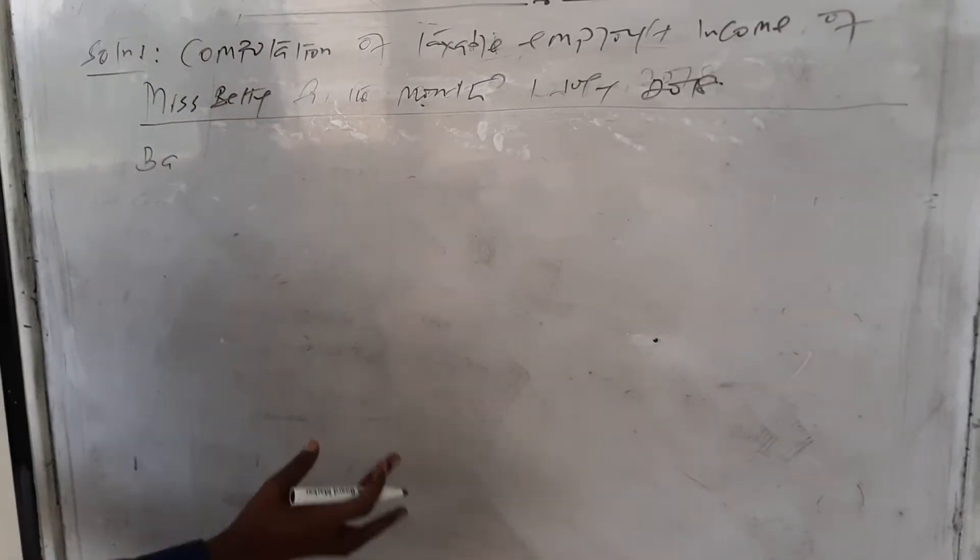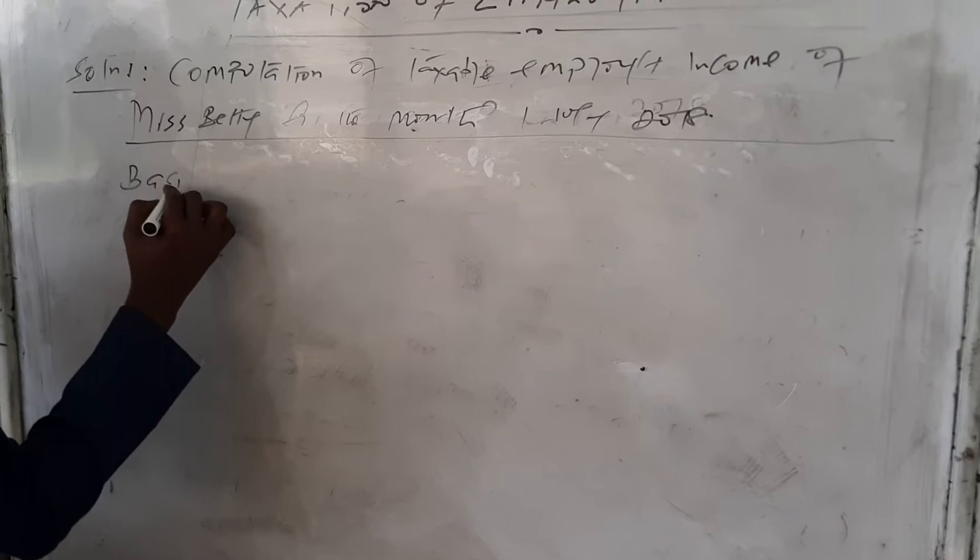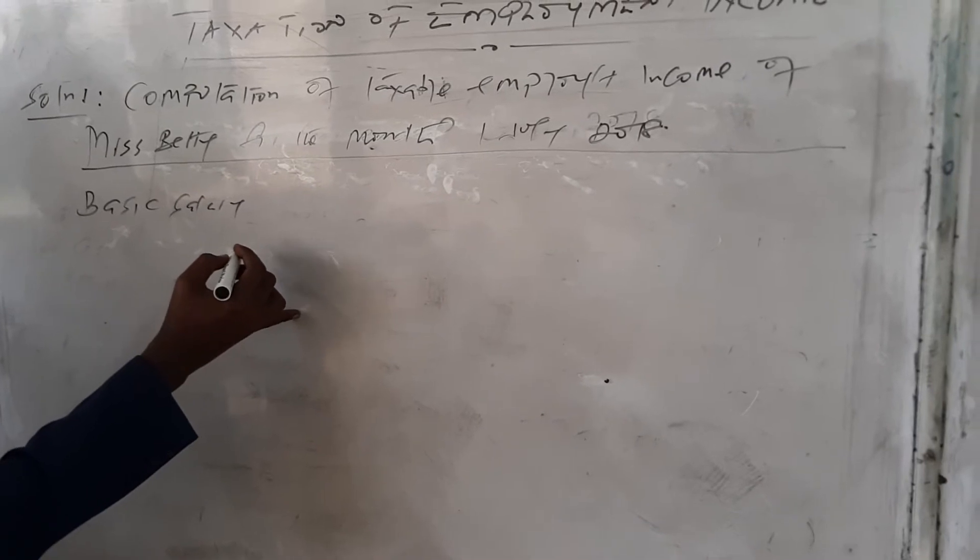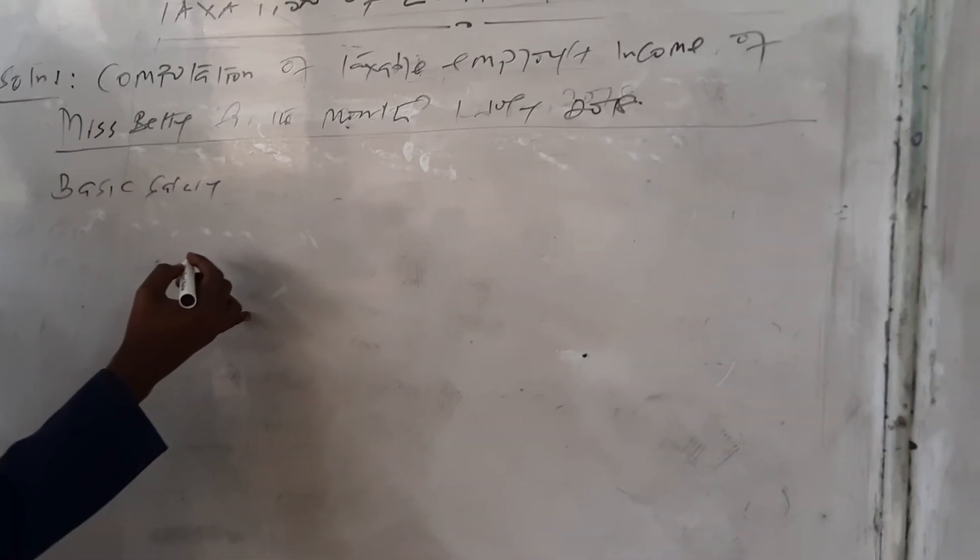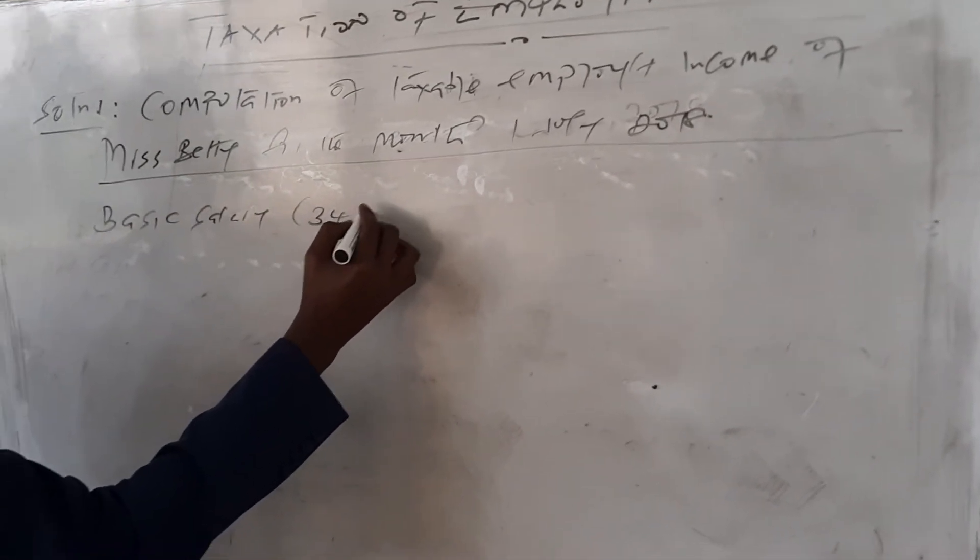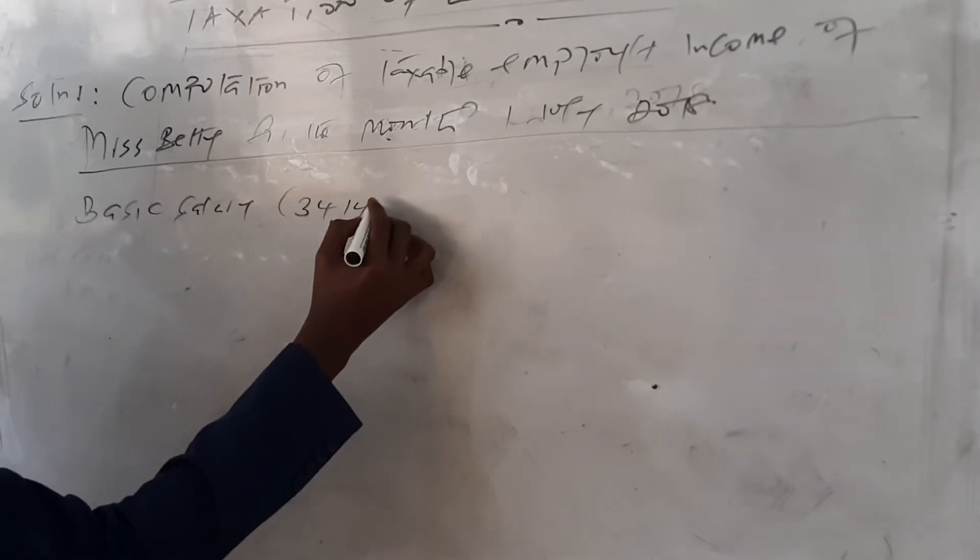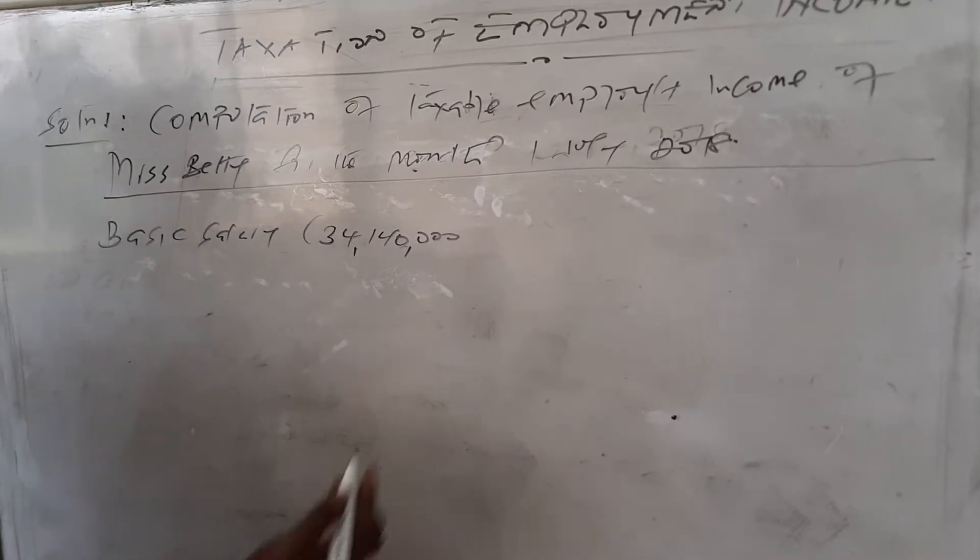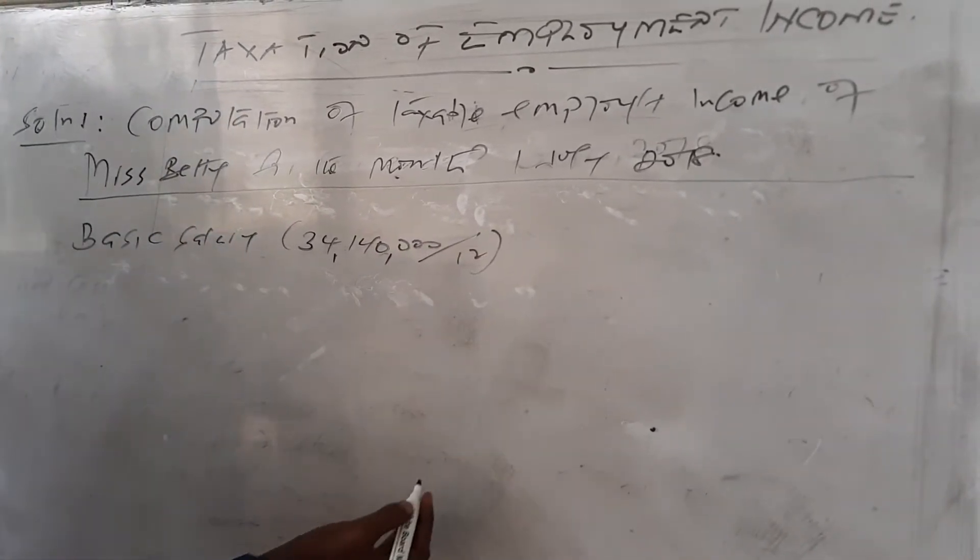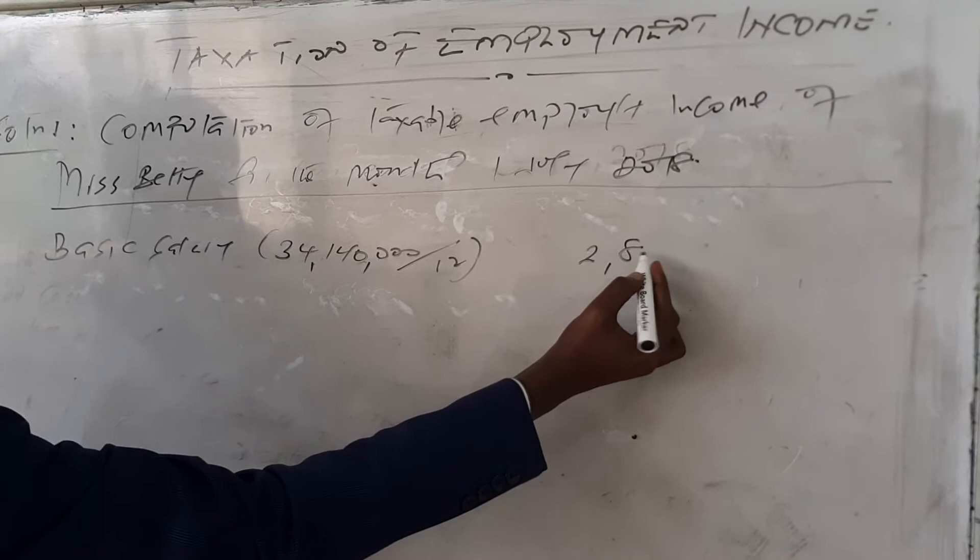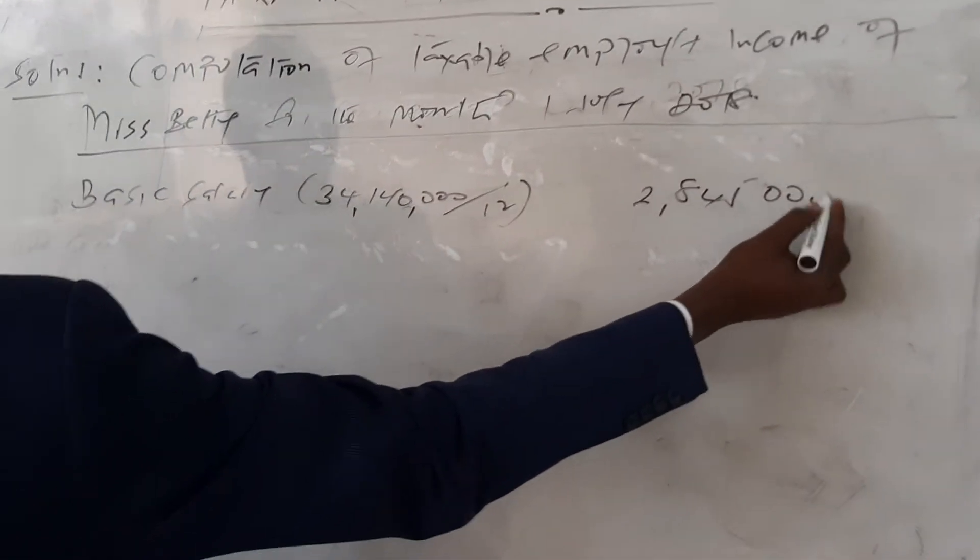Solution to the second question on employment income: we need to compute the basic salary. The basic salary we have is 34 million on an annual basis, so when finding the monthly basis, we divide by 12 and get 2,845,000.